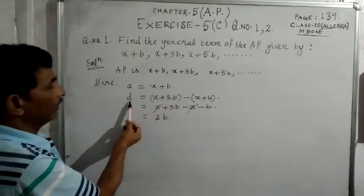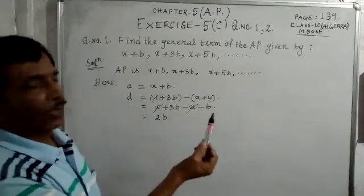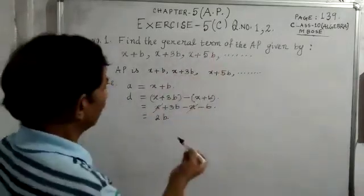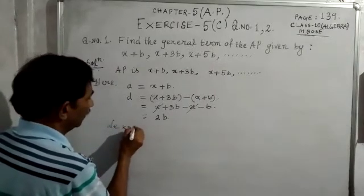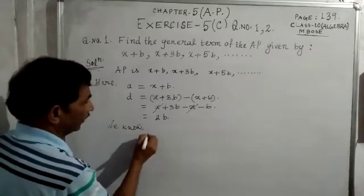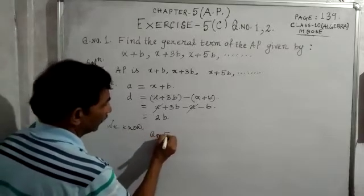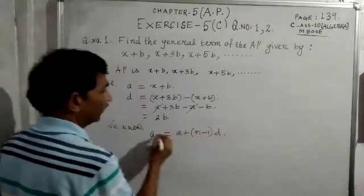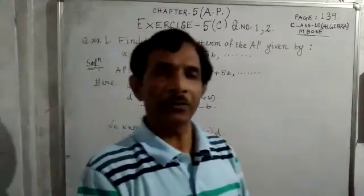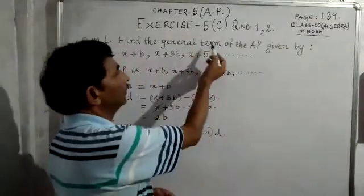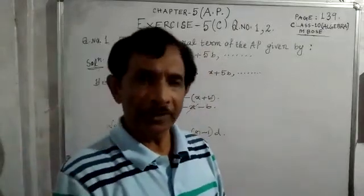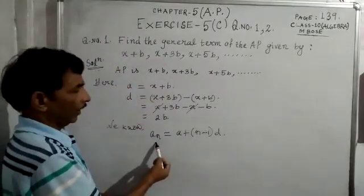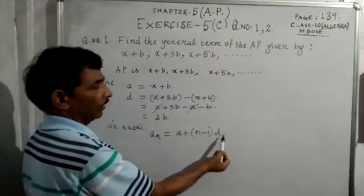So we have the first term a equals x plus b, and the common difference d equals 2b. Now we recall that the general term of an AP — that is, the nth term — is given by: a_n equals a plus n minus 1 into d.